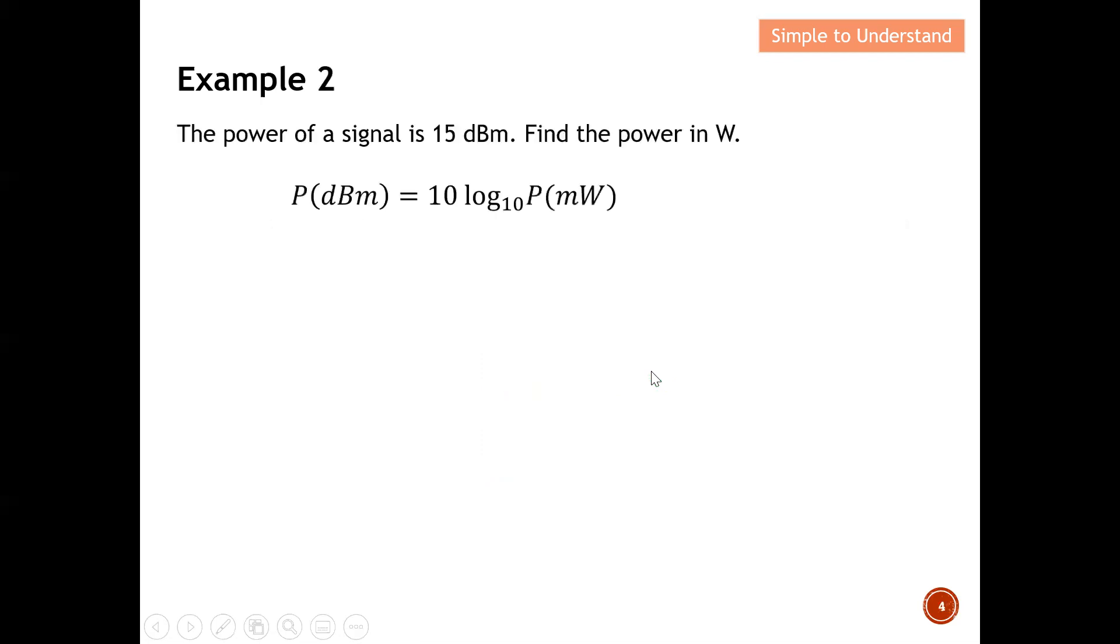Okay, let's quickly do the example 2. Okay, for example 2, the power of a signal is 15 dBm. Okay, find the power in watt. Okay, for this case here, I'm given the power in dBm. And I'm tasked to find the power in ratio. How can I do this?